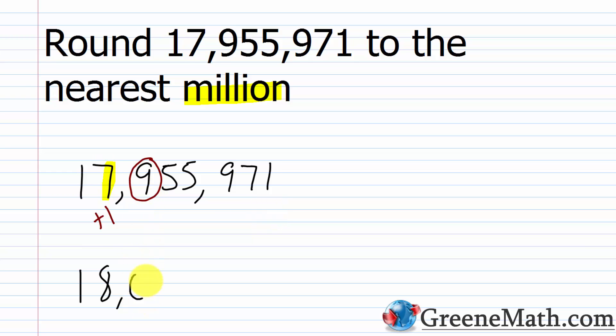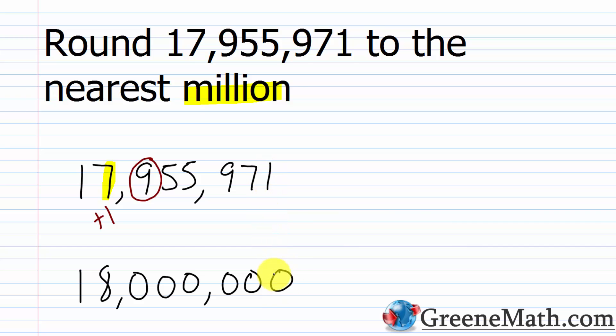So we replace the following digits with zeros: 0, 0, 0, 0, 0, 0. So 17,955,971 rounded to the nearest million is 18 million.